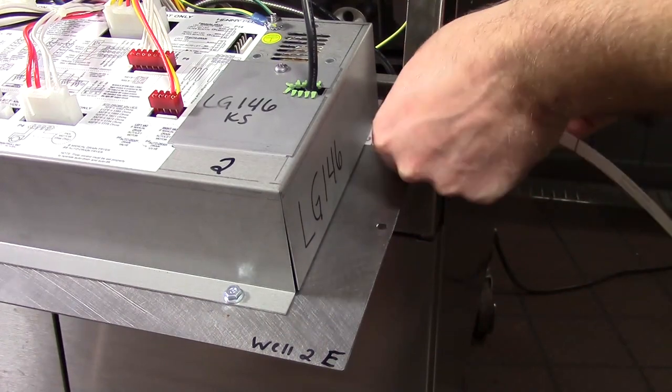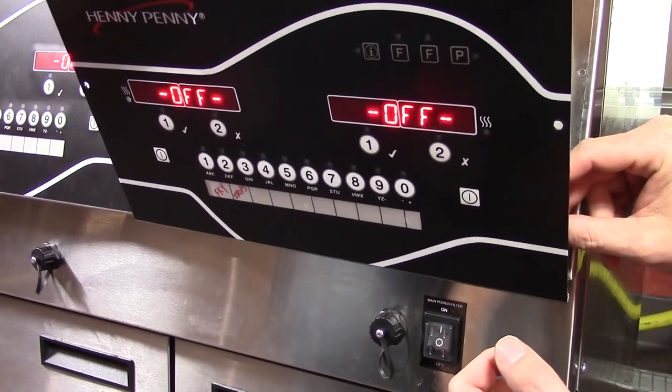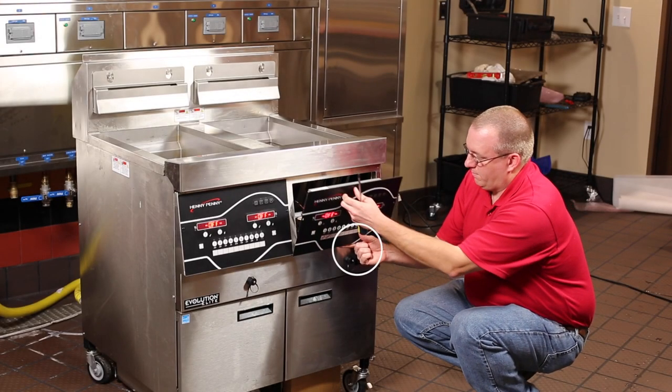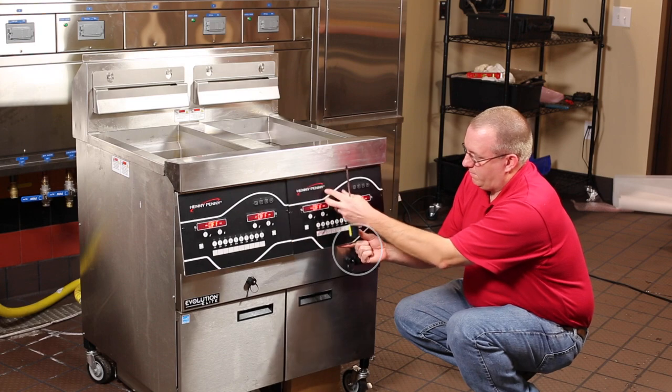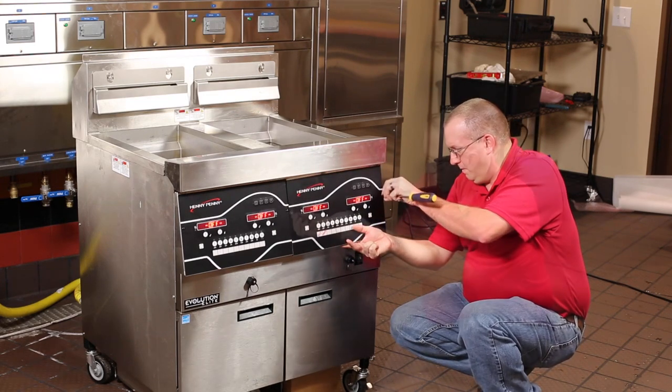Slide the menu strip back into the control. Then tilt the control back up to the raised position. Again, make sure to push up on the bottom of the control while rotating. Put the two screws back into the control.